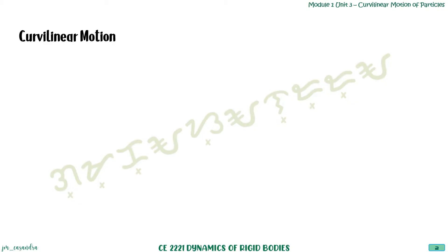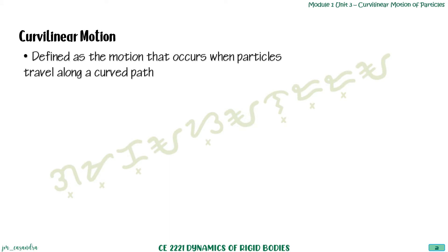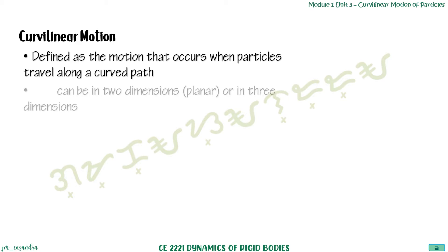To start off, we define curvilinear motion as a motion that occurs when particles move along a curved path. Usually, this curvilinear motion happens in two or three dimensions.